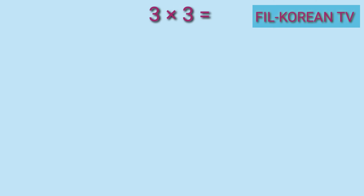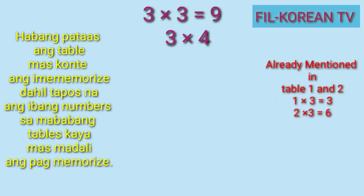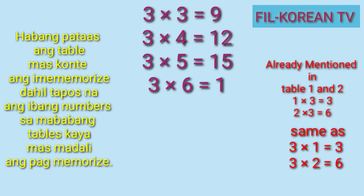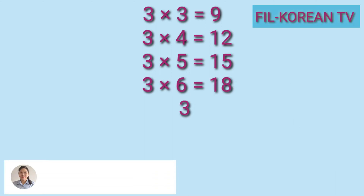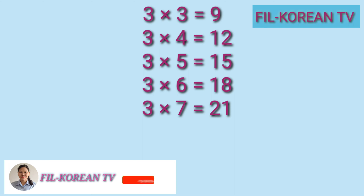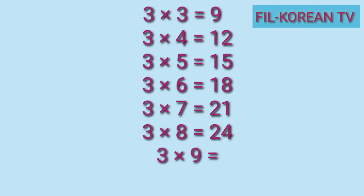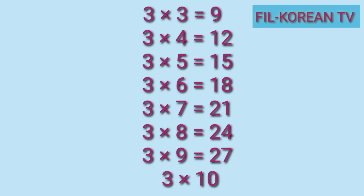Next, table 3. 3 x 3 equals 9. 3 x 4 equals 12. 3 x 5 equals 15. 3 x 6 equals 18. 3 x 7 equals 21. 3 x 8 equals 24. 3 x 9 equals 27. 3 x 10 equals 30.